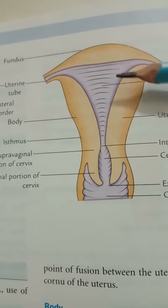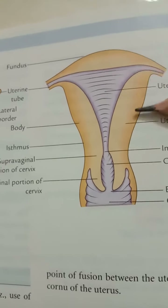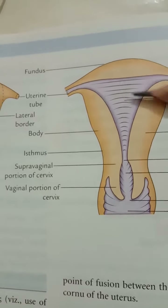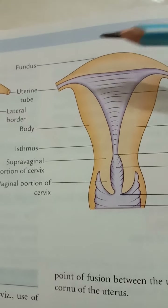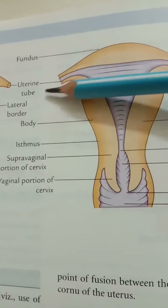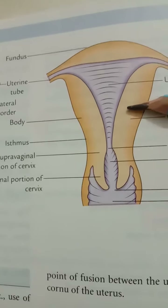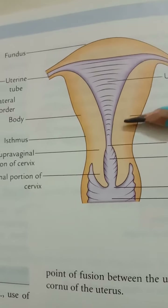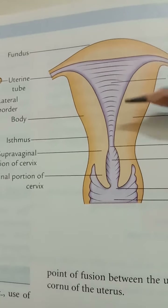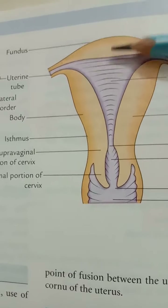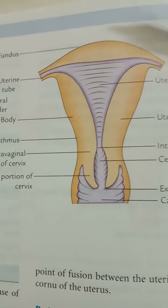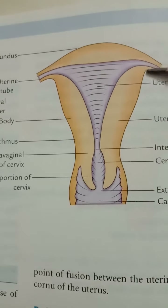The upper expanded dome-like end of the body is called the fundus. The uterine tubes or fallopian tubes open on both lateral sides of the fundus. The body extends from the fundus to the isthmus and contains the uterine cavity. It is flattened anteroposteriorly and has two surfaces and two borders: the anterior surface, the posterior surface, and two lateral borders.